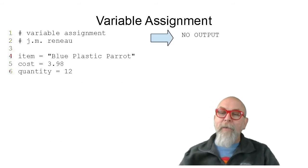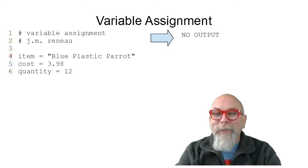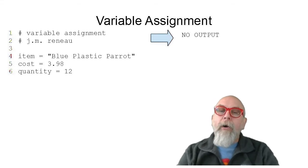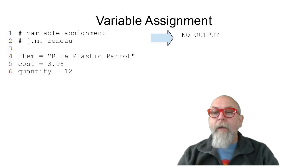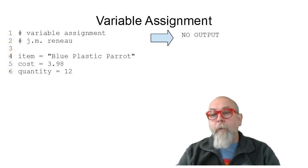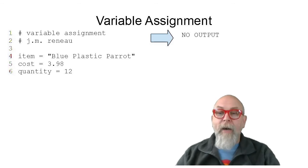Here is a very simple program that assigns three variables. Assigns three variables, the variable item, a string, blue plastic parrot. The variable cost, the float, 3.98. And the variable quantity, the integer, 12. If you notice that this program outputs nothing because we don't print the values or do anything with it, we create the three values in the computer's memory, assign them the values, and then the program ends and they're deleted and returned back to the computer as free space. So this program doesn't do anything, but it does create three variables and assigns three different types of values to those three variables.